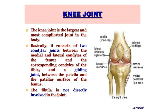Knee joint is the largest and most complicated joint in the body. It is a complex joint because of the presence of particular discs in the form of two menisci.